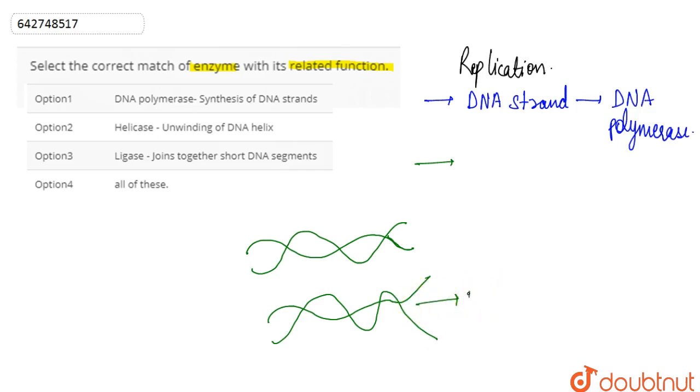This unwinding, or we can say the opening of the DNA helix, is basically brought about by the enzyme helicase. So we can say that option one and two are both correct.